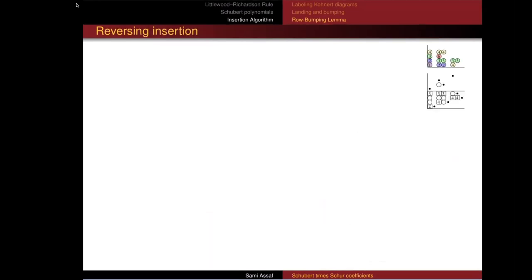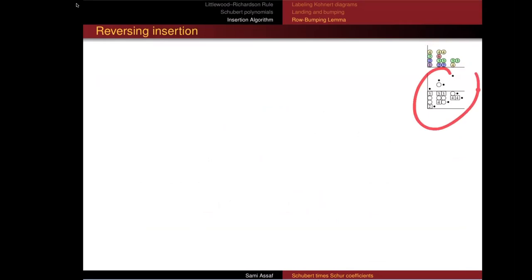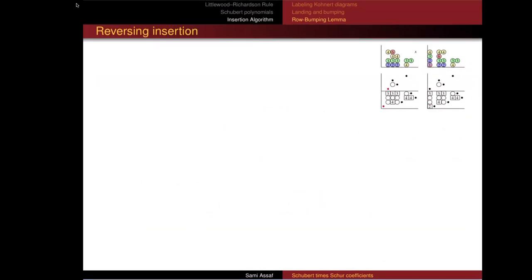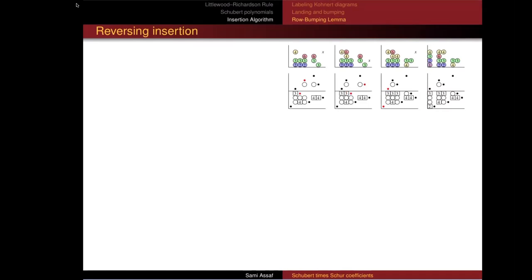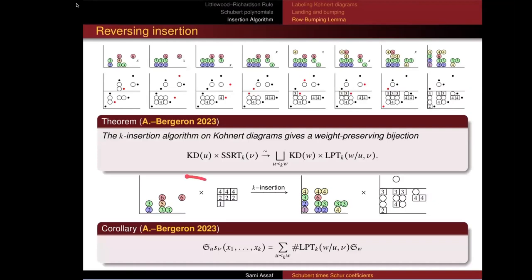I'm running short on time, so I won't go through this one too much. But here I have the same insertion diagram — let's switch the recording tableau. This two is the last thing inserted and the first to be removed. I'm going to uninsert from this column: pop out a four, uninsert from that three and pop out a two, uninsert from this three and pop out a four, then a four, then a one, then a two, then a two — which gives me another example of the insertion with a different recording tableau, a different insertion, and a different tableau that I multiply here.